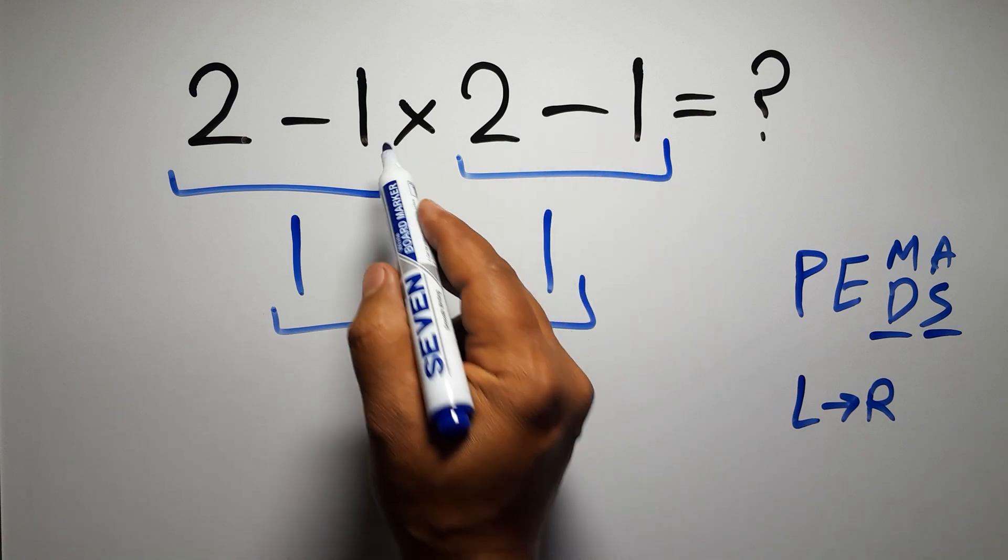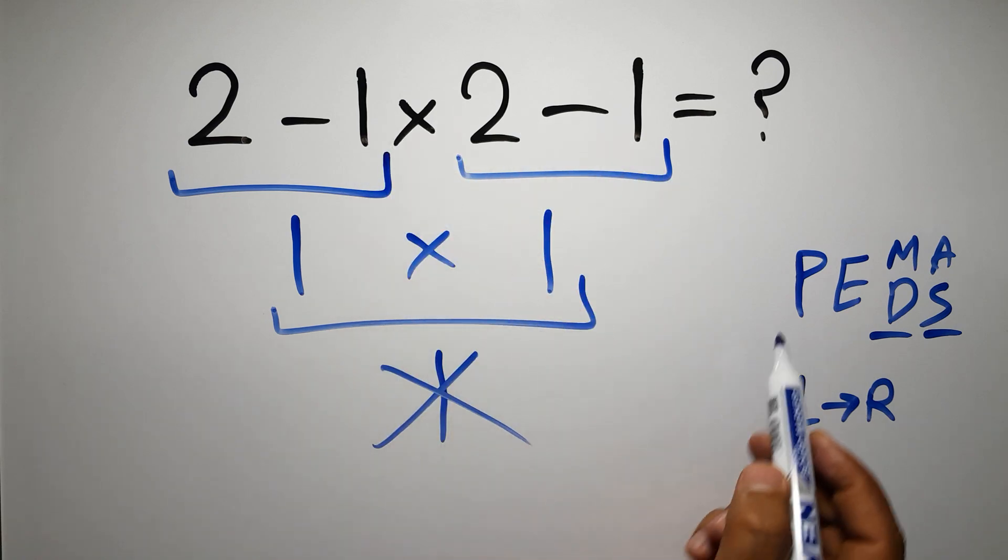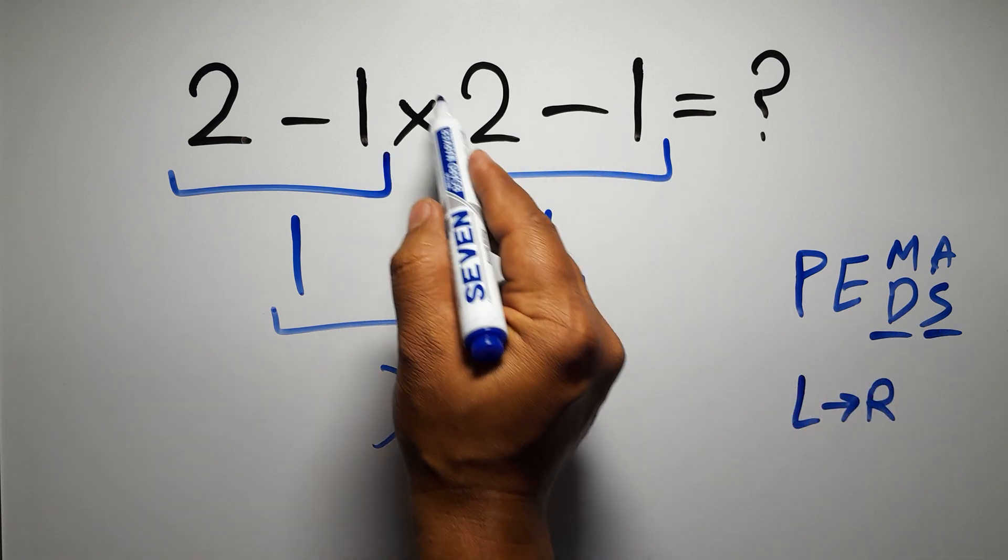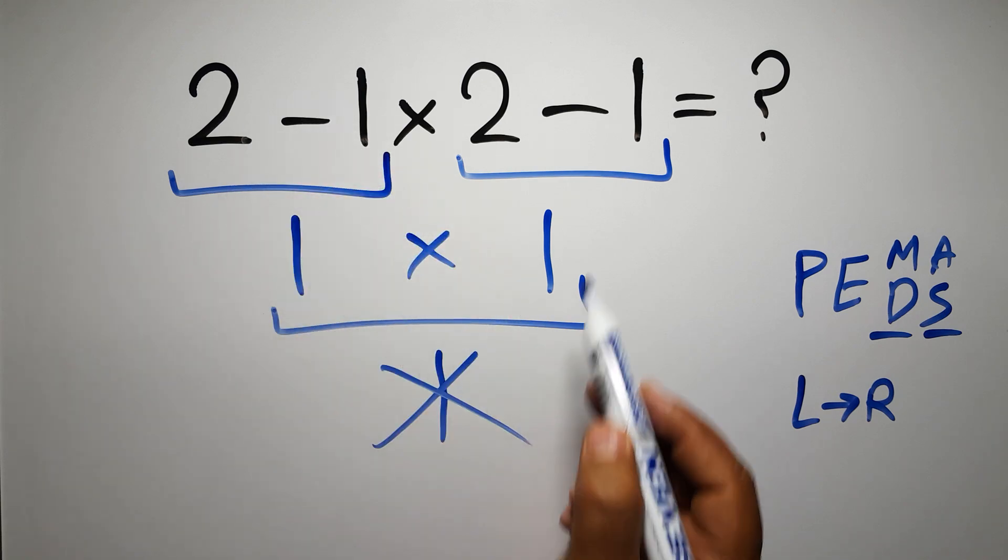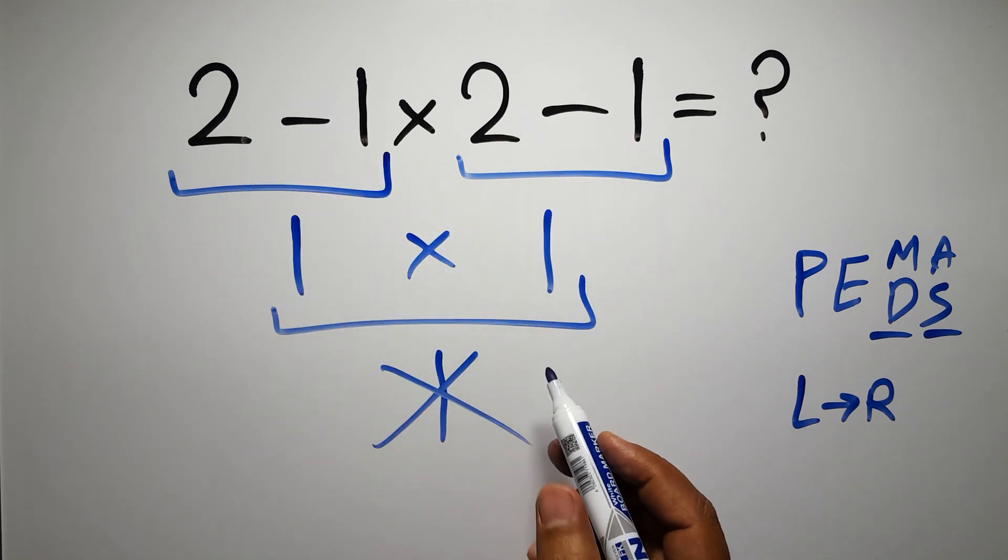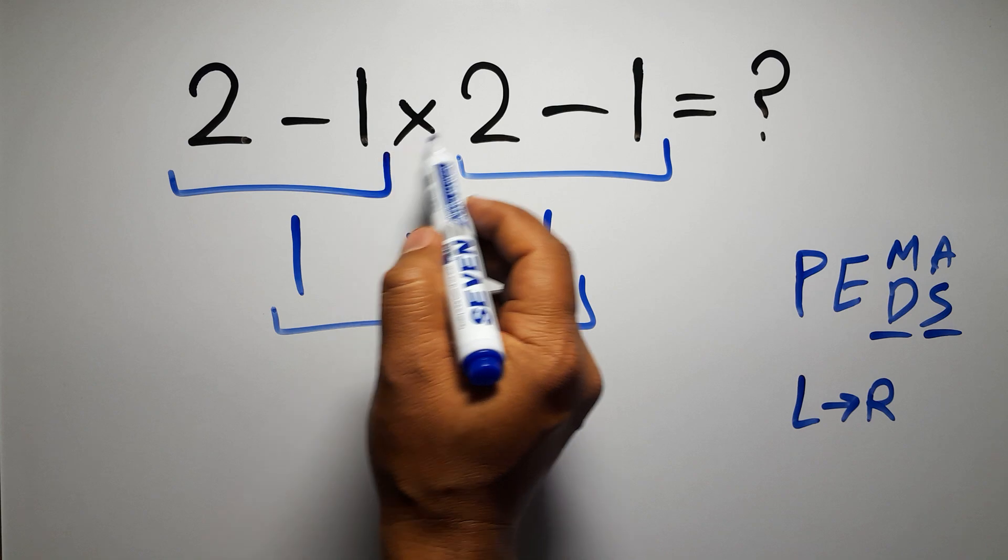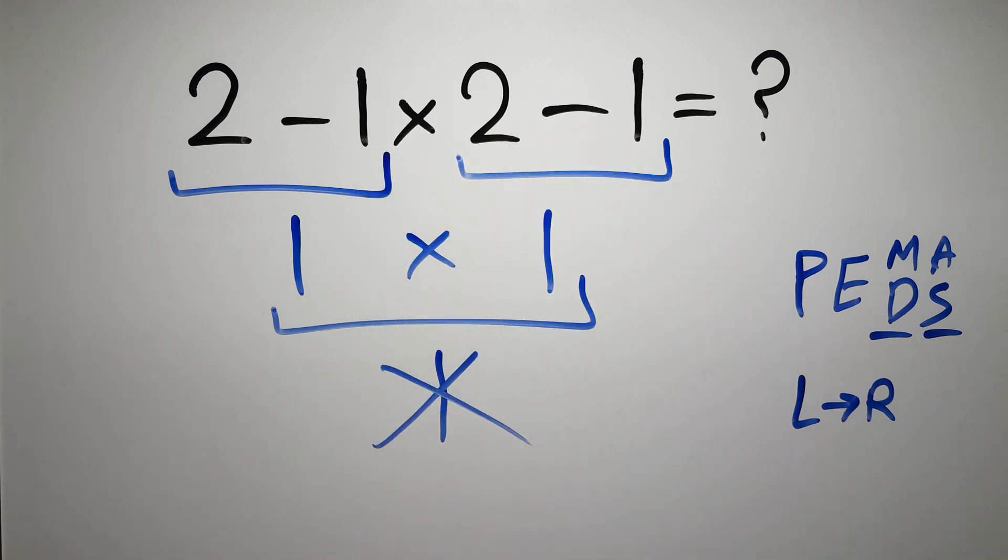In this expression, we have 2 subtractions and 1 multiplication. According to the PEMDAS, first we have to do this multiplication, then this subtraction, and finally this subtraction. If we do this subtraction before this multiplication or this subtraction, it is wrong.